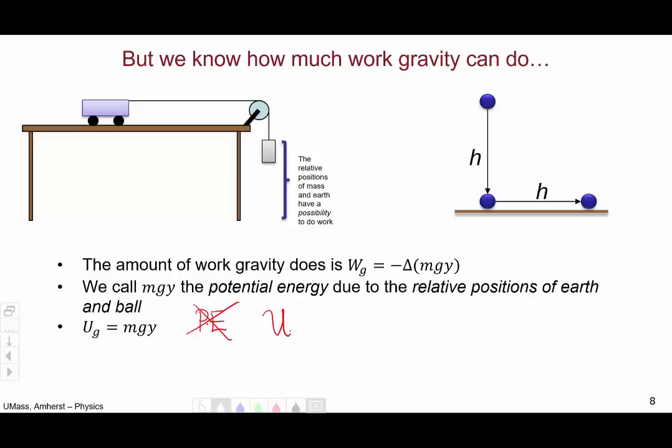So the potential energy due to gravity from the relative positions of, say, a ball in the earth or a mass in the earth is given by mgy. We choose this definition for the conceptual reason that more y, or higher off the ground, means more potential energy. This matches with our intuitive understanding. The higher an object is off the ground, the more work it can potentially do, so the more energy it must have.